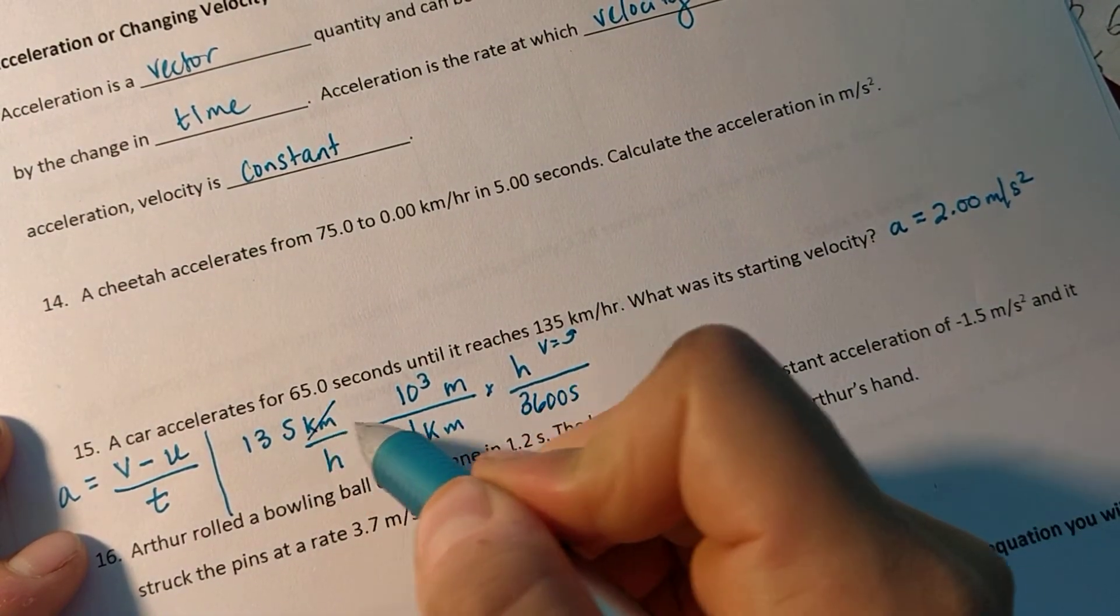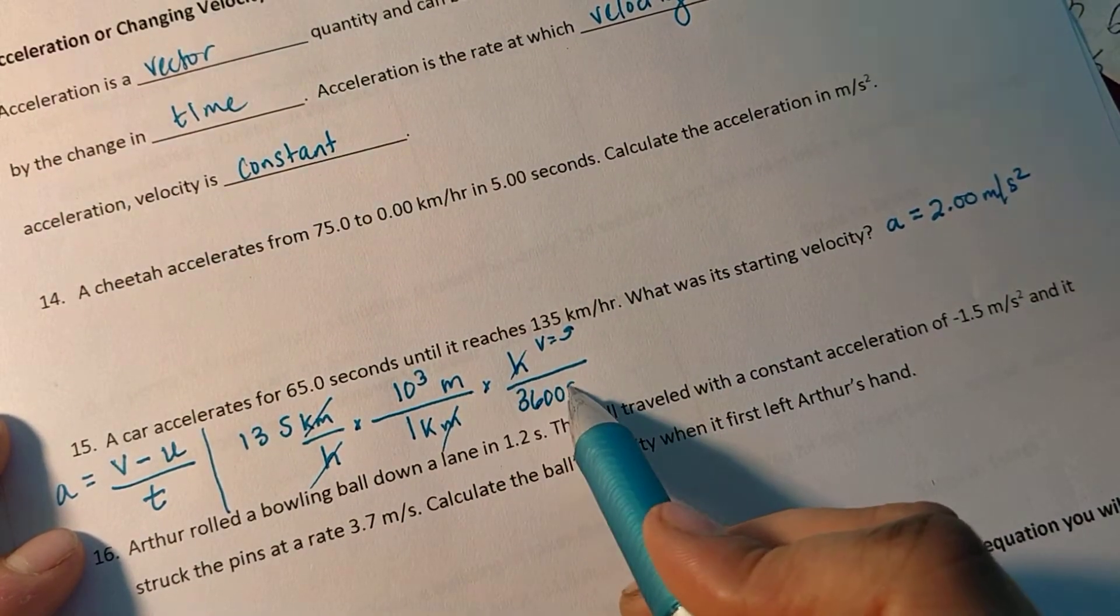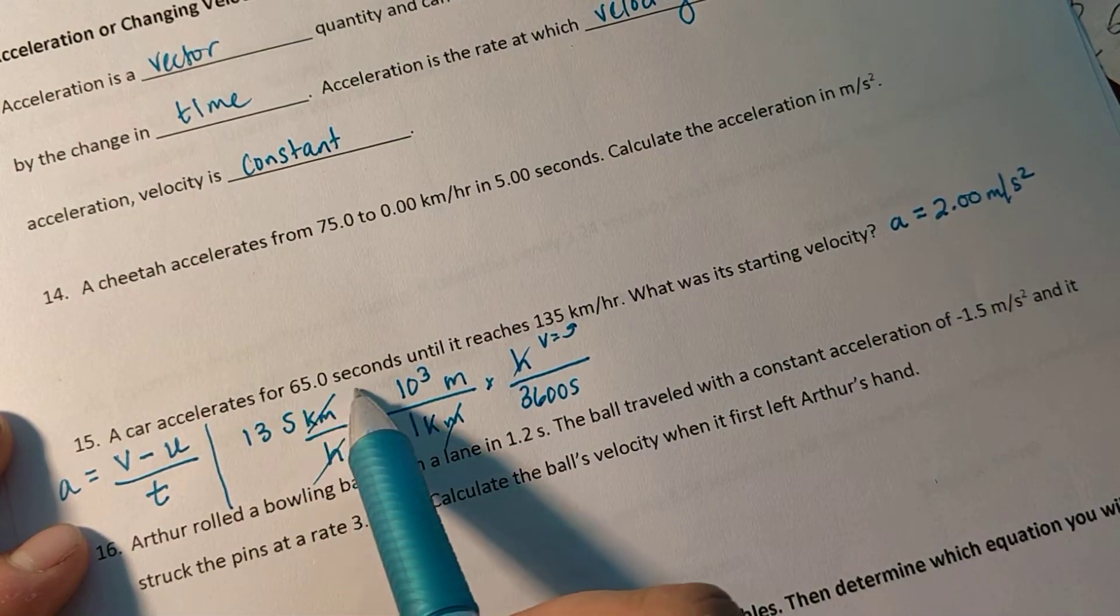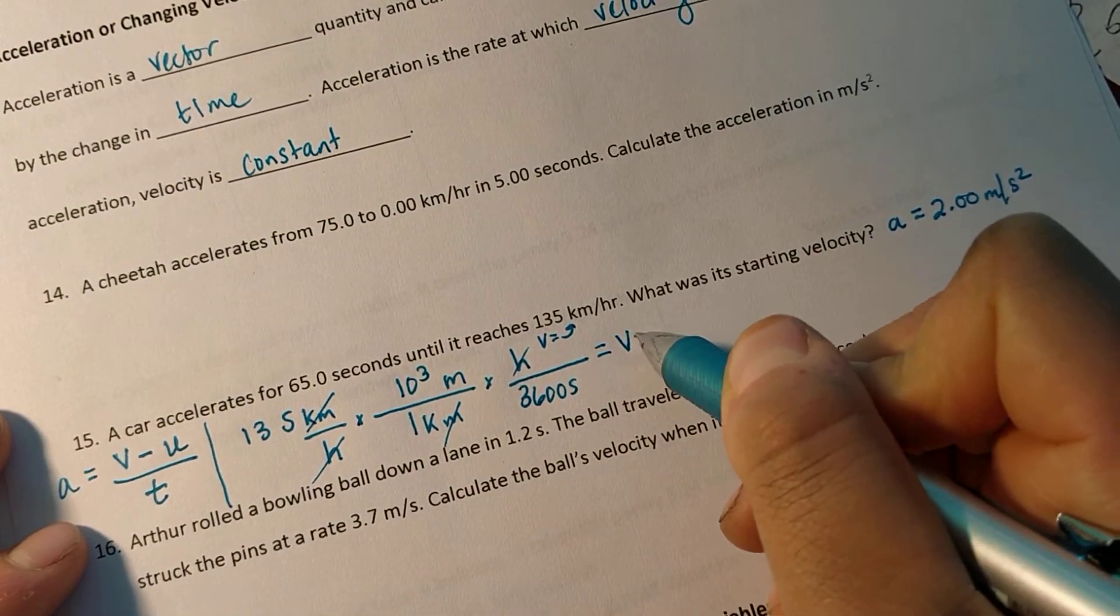So you can see here my kilometers will cancel. My hours will cancel. And I'll be left in meters per second. So I can use this acceleration without changing it. And I can use these 65 seconds without changing them. So let's get my final velocity, v,